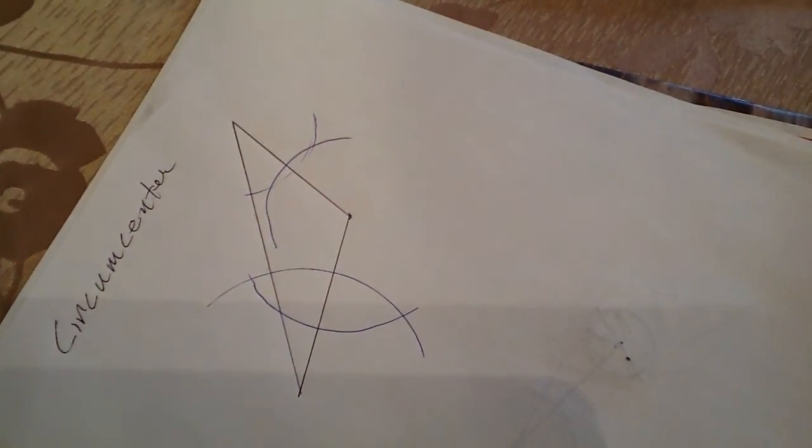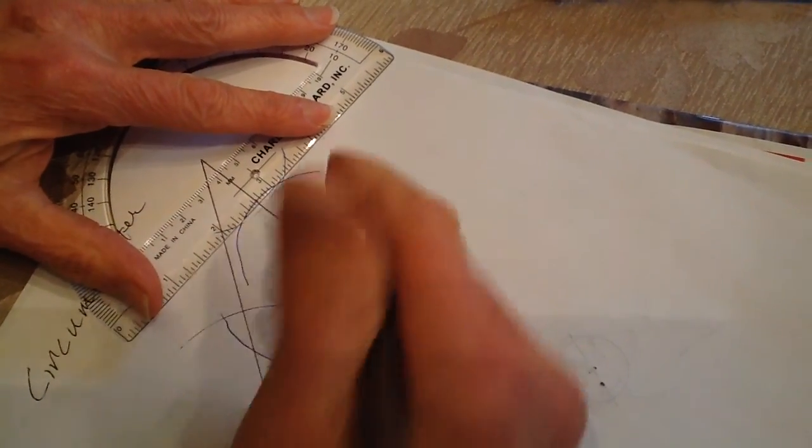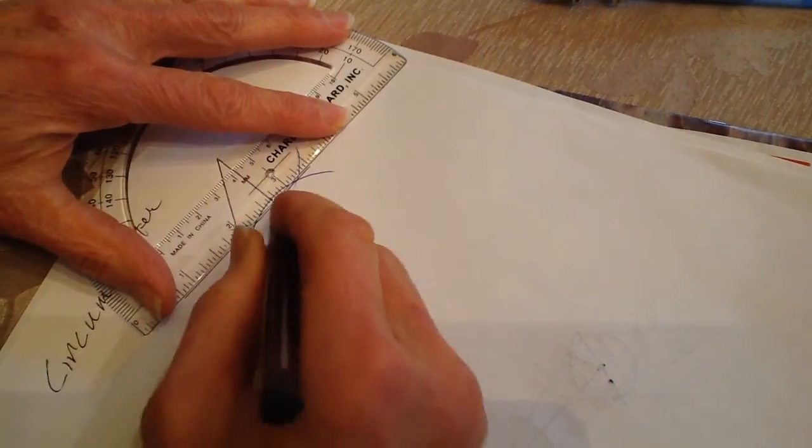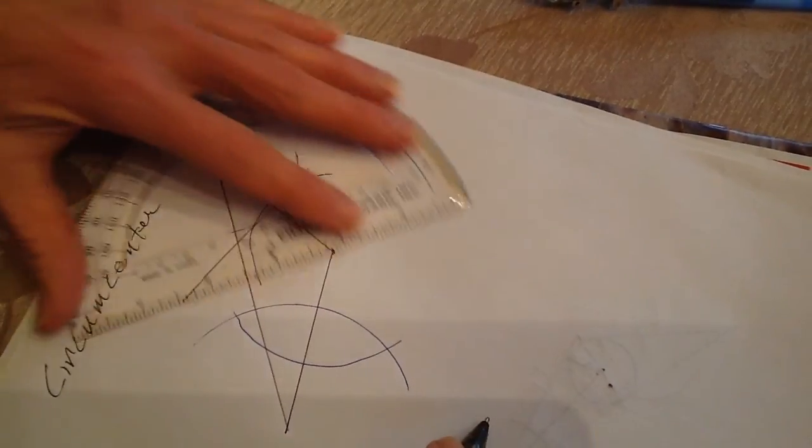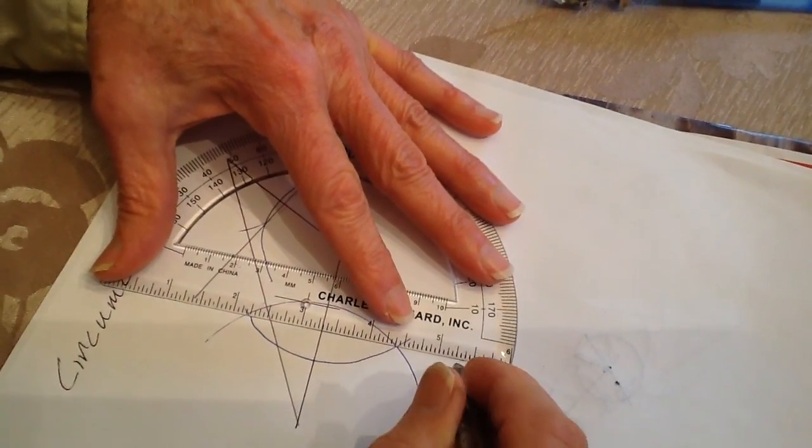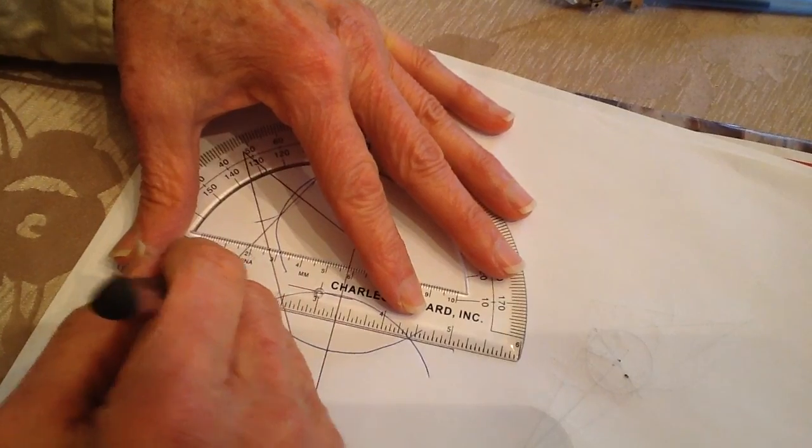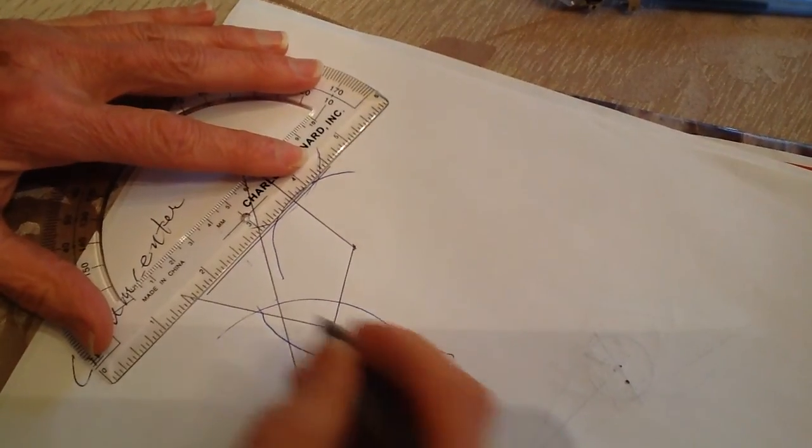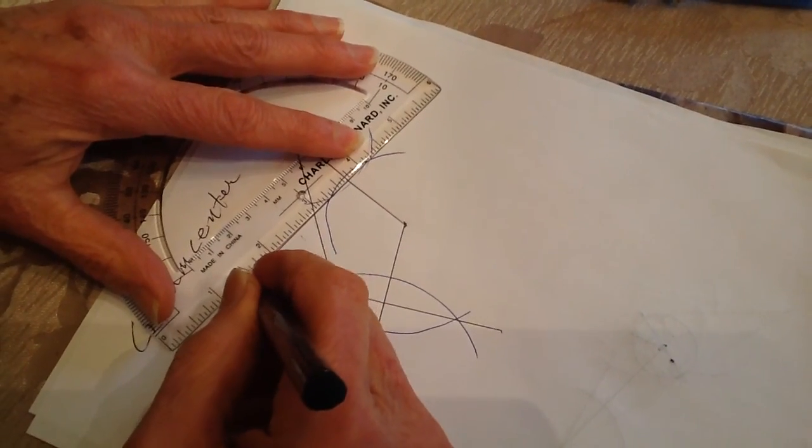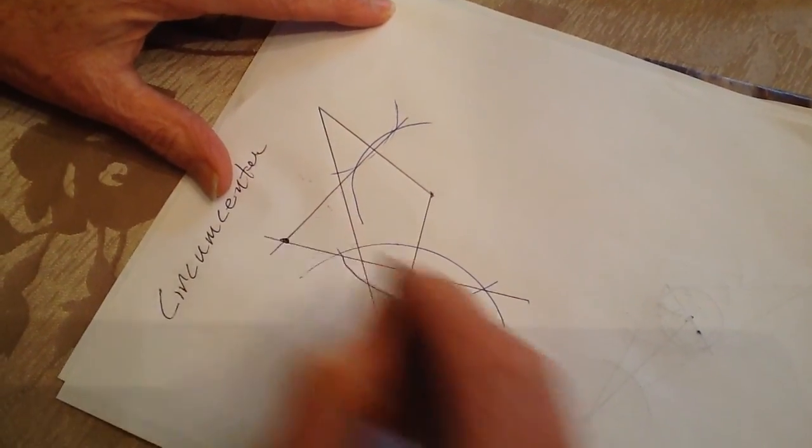All right, so now I connect these right here, so these become perpendicular bisectors of this side, of that side, and then one of this side. And what happens is that because on an obtuse, it will meet outside the triangle. On a right triangle, it will meet right on the hypotenuse, and then of course in an acute triangle, it will meet inside. So this is the circumcenter.